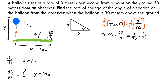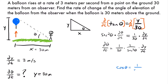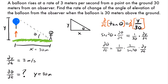We're solving for dθ/dt, so we divide both sides by sec²θ: dθ/dt = (1/30) · (1/sec²θ) · dy/dt. We can simplify because cosine and secant are related — cos θ = 1/sec θ — so 1/sec²θ equals cos²θ. Therefore, dθ/dt = (1/30) · cos²θ · dy/dt, which makes the final calculation a little easier.